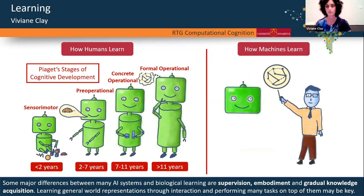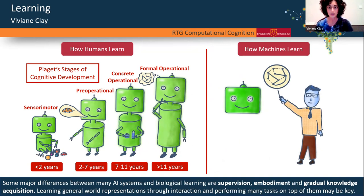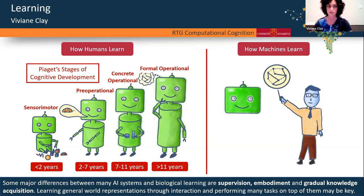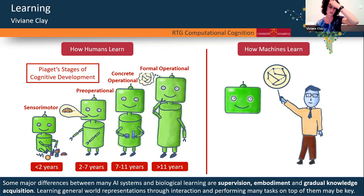Later, children learn to attach words and meaning to objects, and after many years they learn inductive and deductive reasoning and abstract thought — but it takes a long time. Comparing to how machines often learn: there's often very dense supervision after every example, machines often don't have a body to interact with the world, and there's usually not gradual knowledge acquisition. You start directly with the final task to be solved.